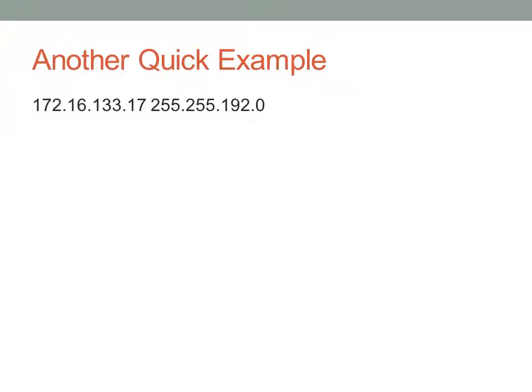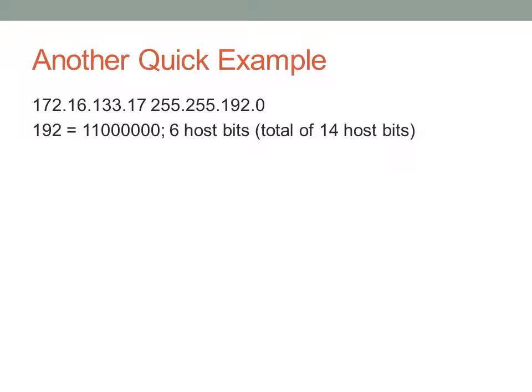Let's do another quick example. We have 172.133.17.x, and you'll notice the interesting octet is not the last octet but the third octet: 192. If you have it memorized, 192 is two 1s, which means you have six host bits in that octet. When looking at the magic number, we only look at the number of host bits in that interesting octet. The magic number is 2 to the 6th, or 64. So our subnets will go in multiples of 64.